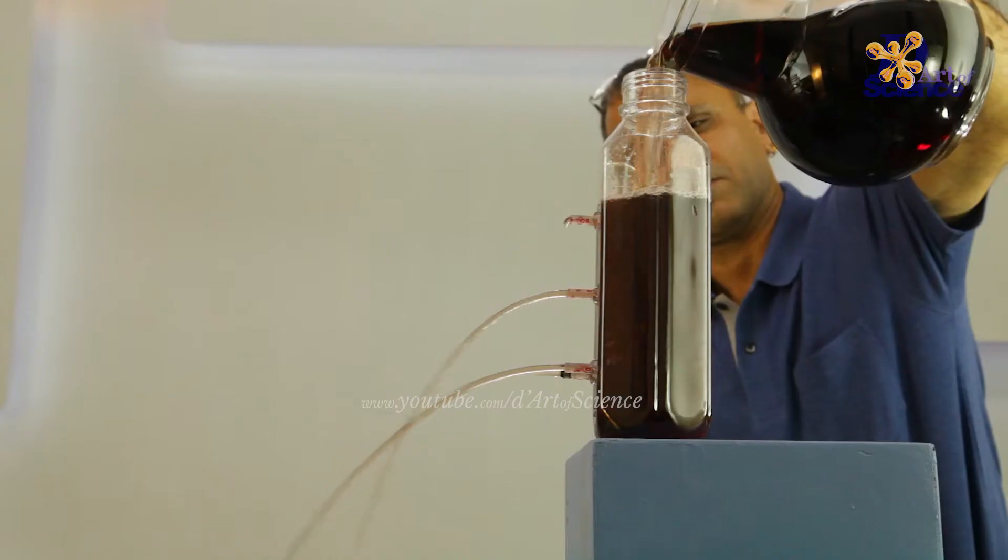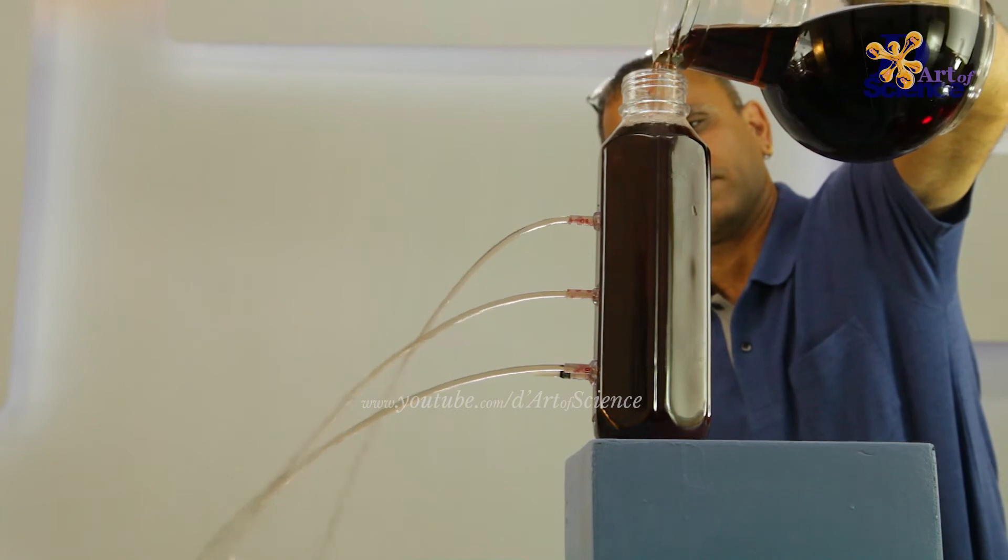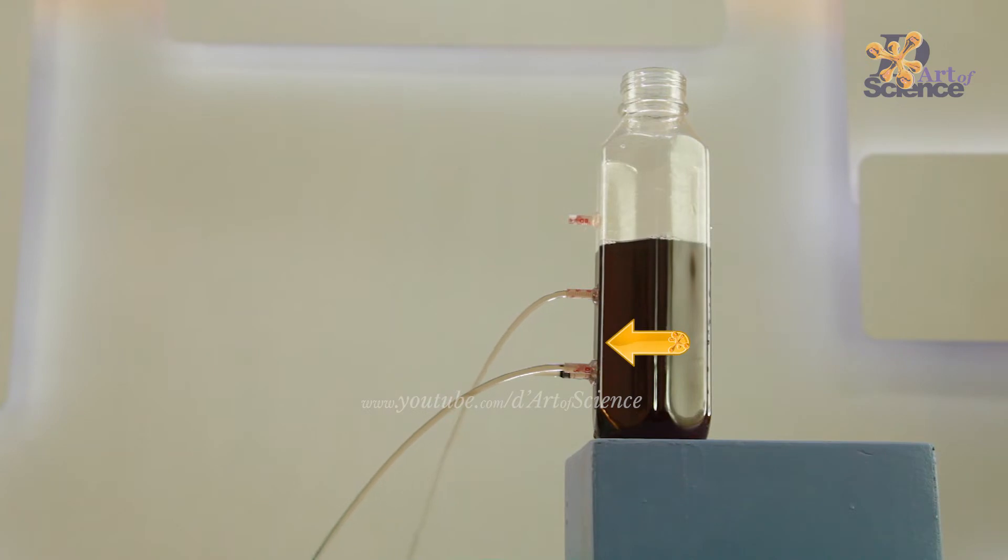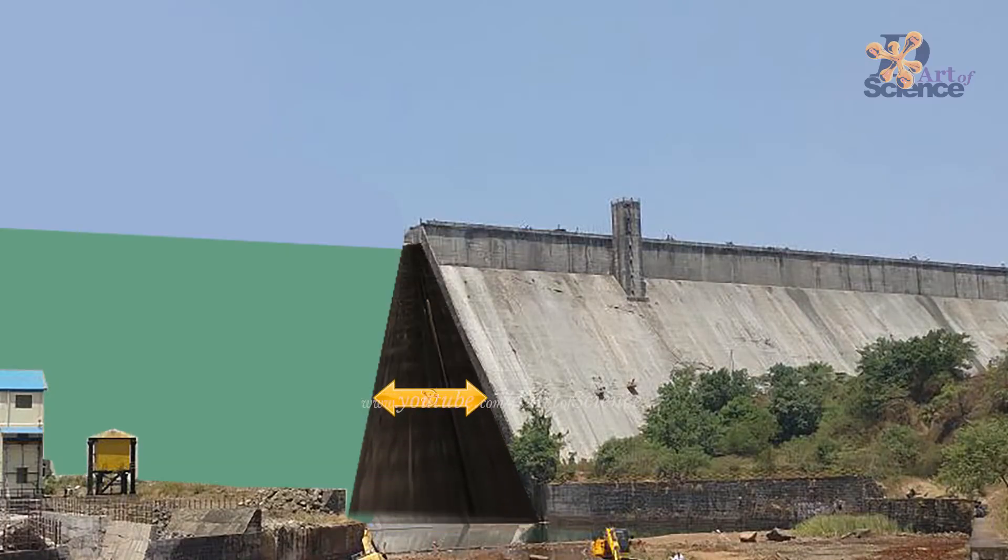When we did the experiment with the 3 holes in the walls of the bottle, did you notice that the holes were on the side walls? So that means that liquids do exert pressure on the walls of the container as well. At the surface of the liquid, the pressure on the side walls is almost zero. And as we keep going deeper, the pressure increases. And it is maximum at the bottom. This is also why dams are built thicker at the bottom and thinner at the top, since there is a lot more pressure at the bottom.